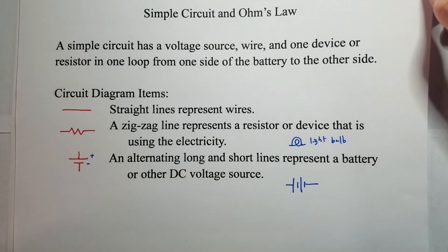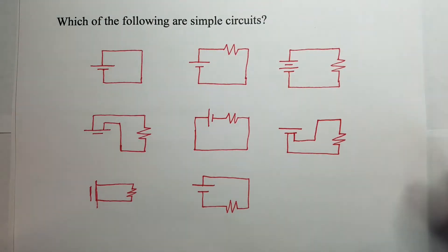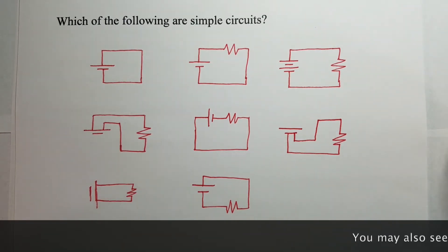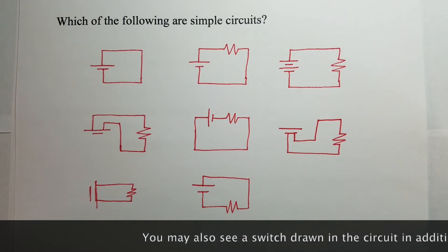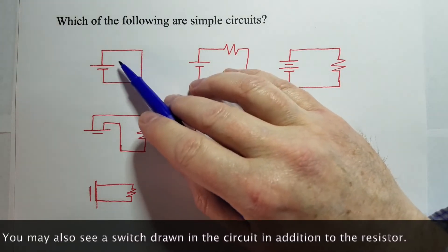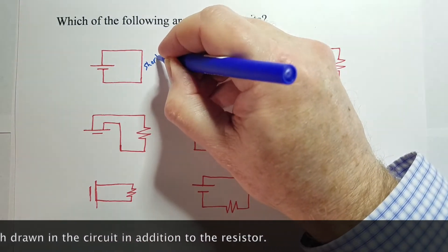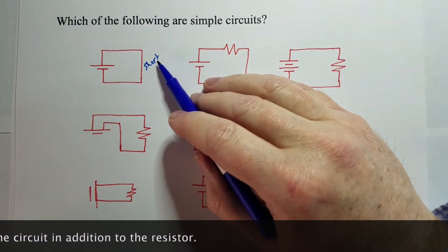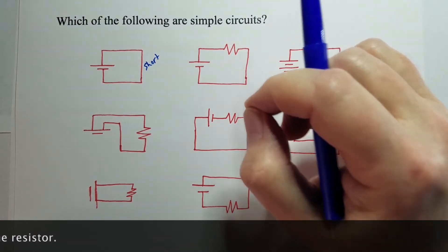Let's put these together and see if we can identify a simple circuit. Here's a bunch of examples. Which one of these is a simple circuit? I'll give you a chance to look and then we'll go over it. Okay, so this first one is not a simple circuit — there's nothing to use the electricity. A lot of times we call this a short, although that's not the only thing we call a short. Sometimes where the wires are broken and don't make good connections, we'll also call that a short.